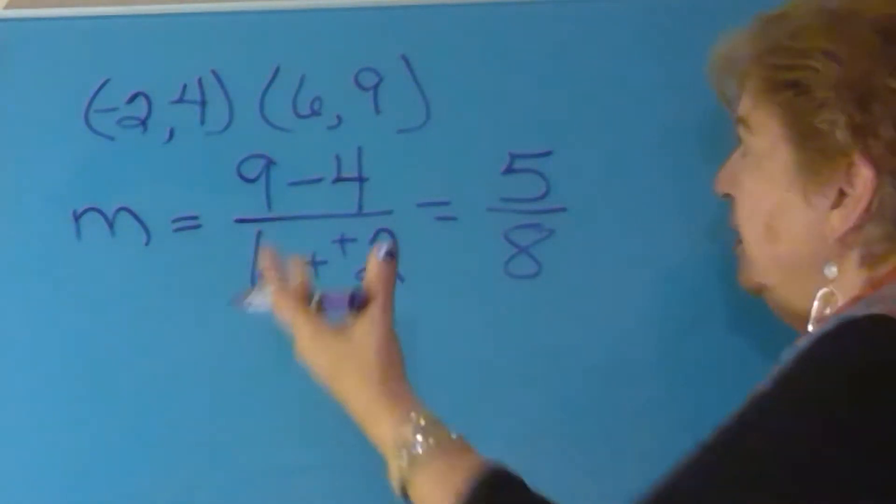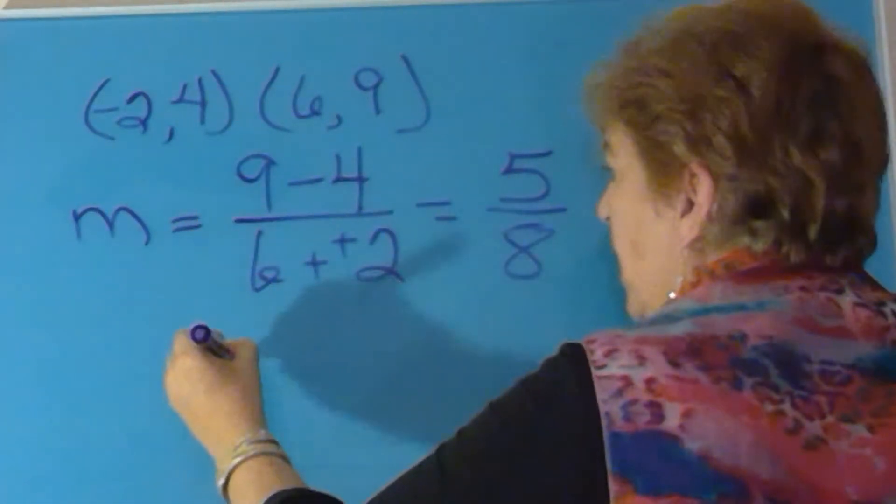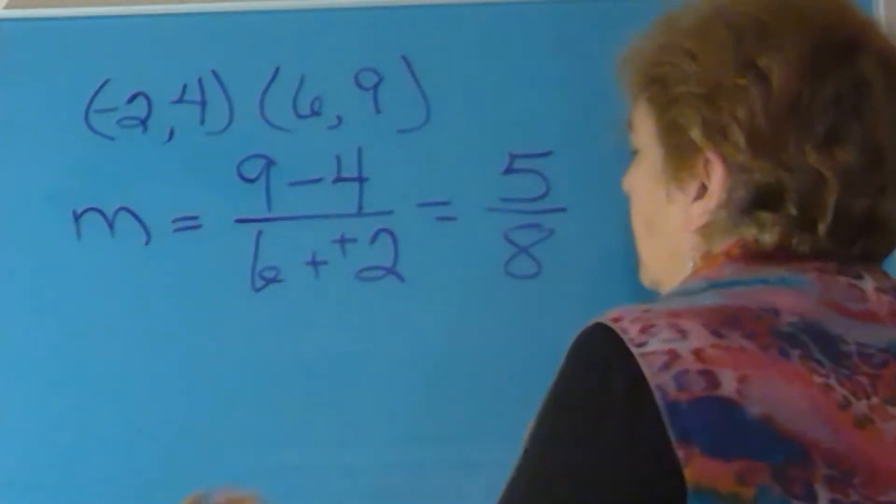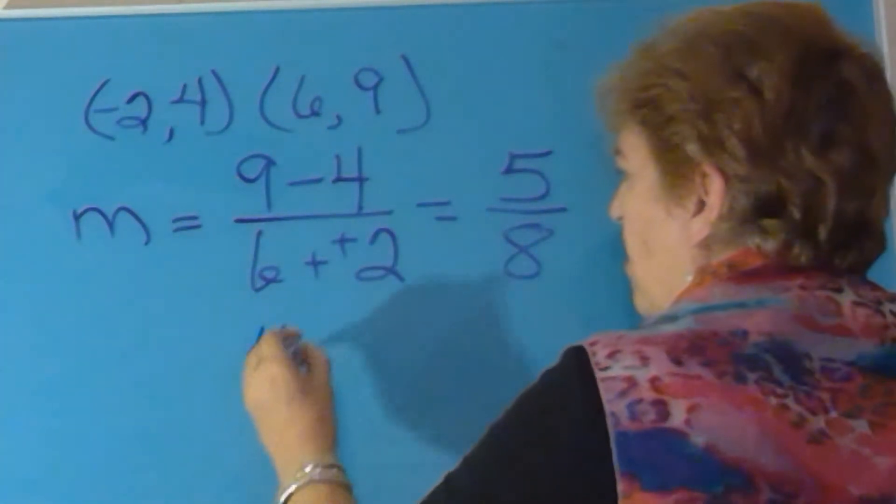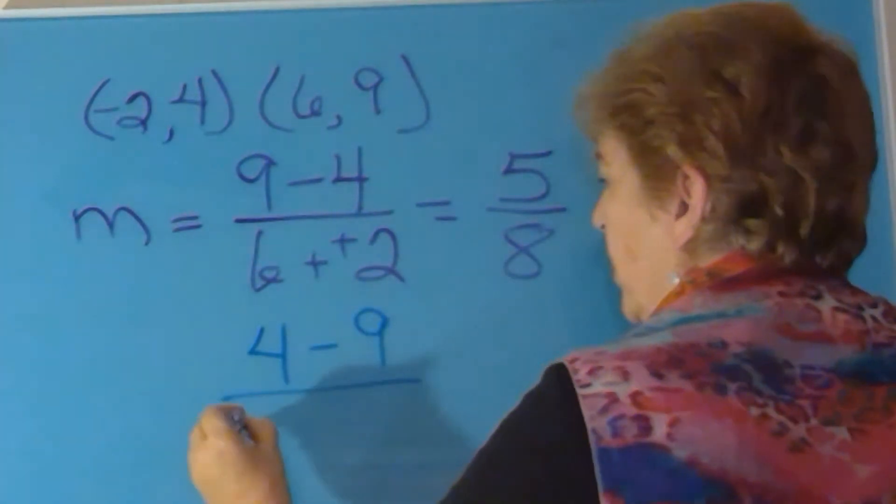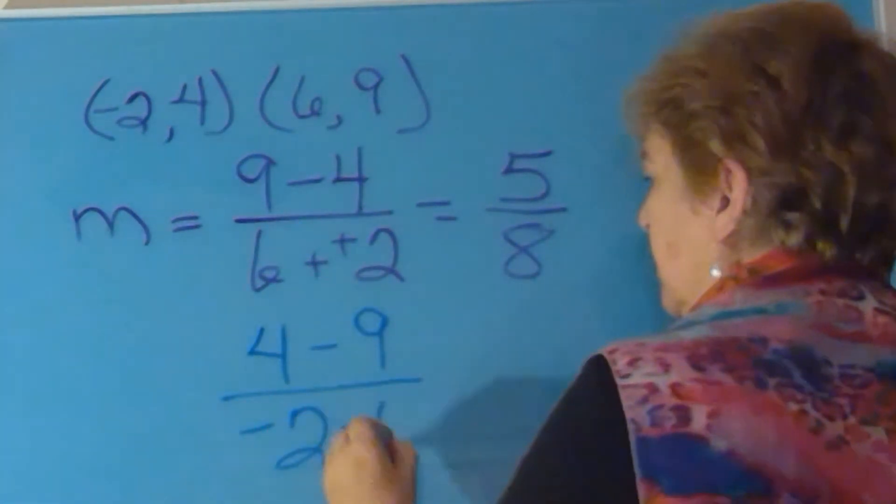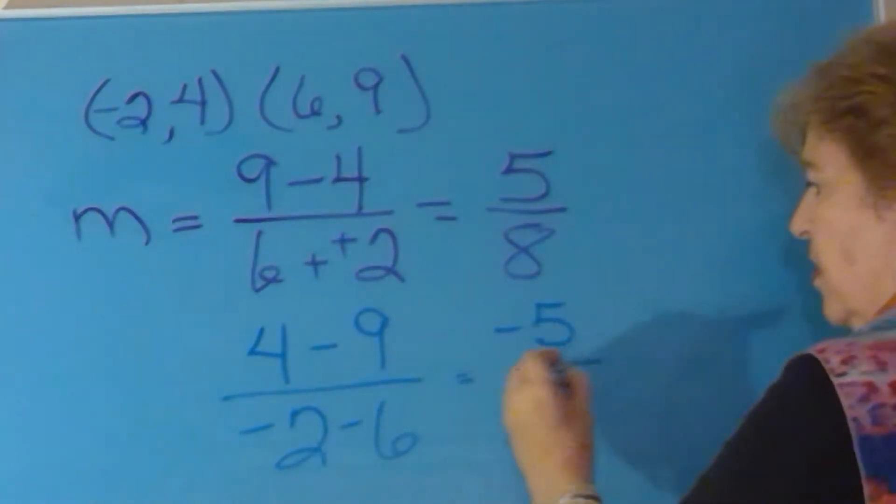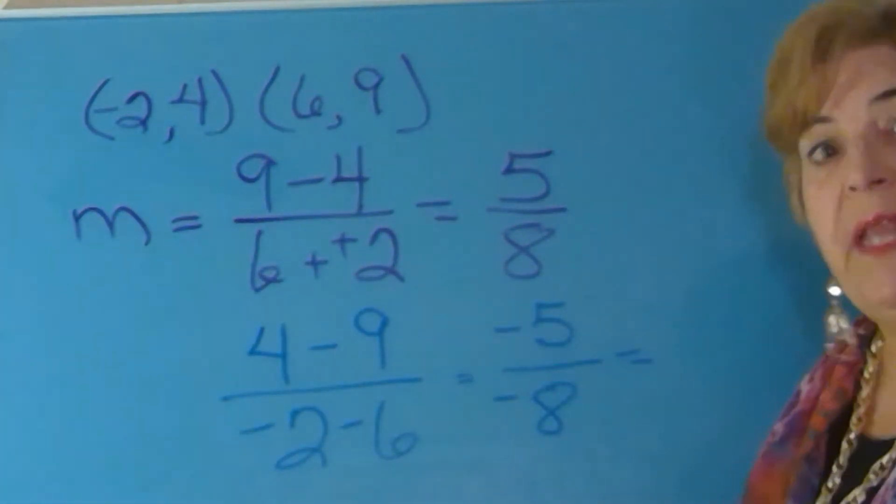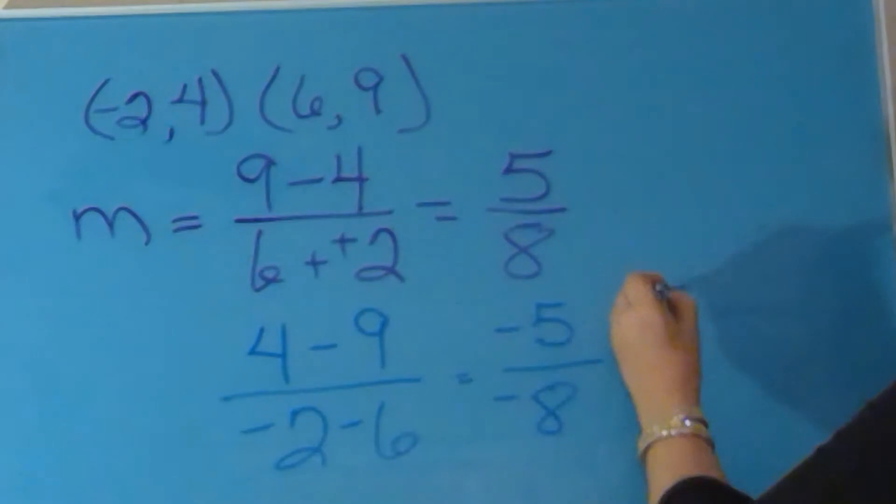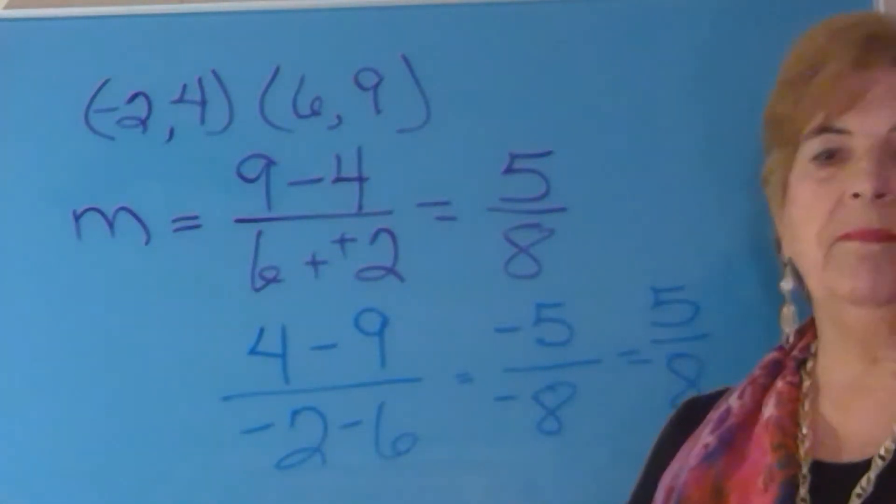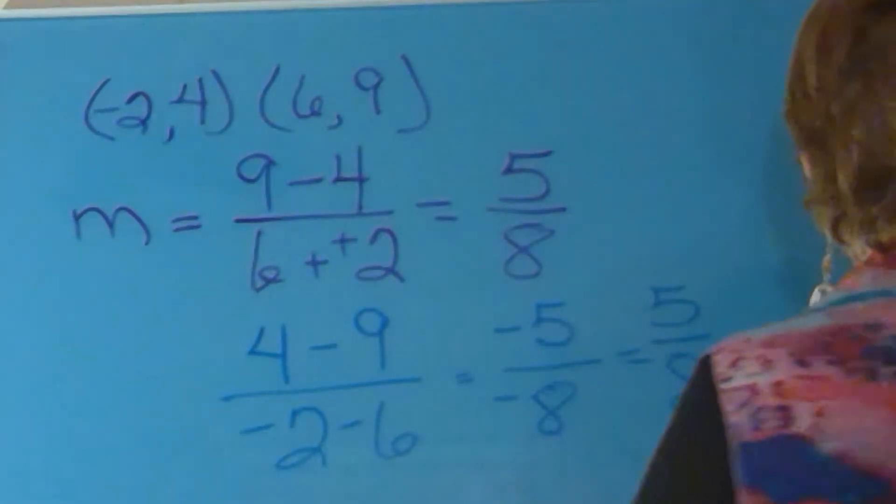If you had done it, subtracted the other way, you would have had four minus nine over negative two minus six. That would have given you a negative five over a negative eight. And a negative divided by a negative is a positive. So you still would have had five eighths, no matter which of the two ways you did that.